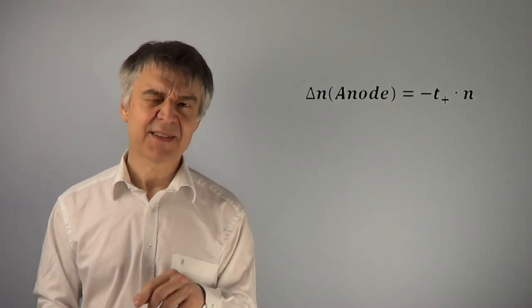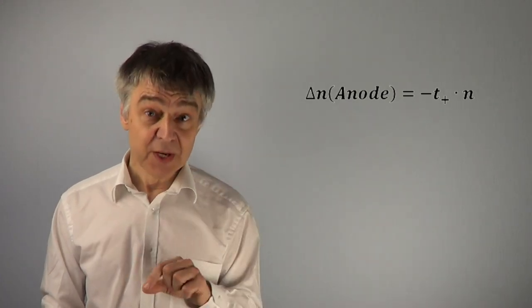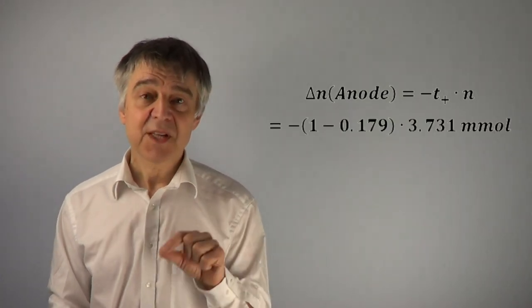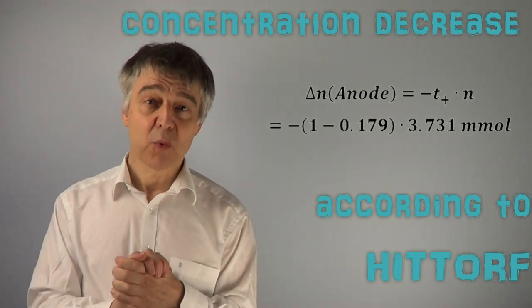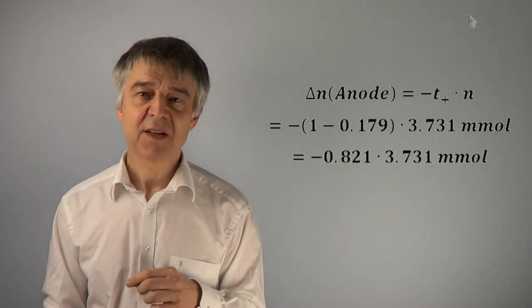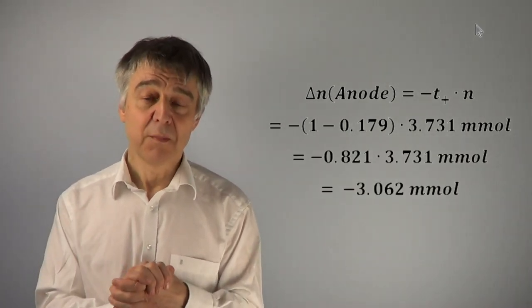The actual decrease in the concentration at the anode is slightly less than 3.731 mmol due to the migration of ions. It is given by T plus times 3.731 mmol, which equals 3.062 mmol.